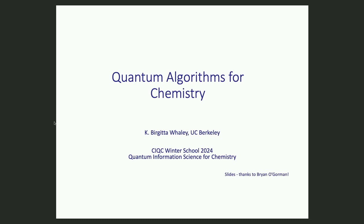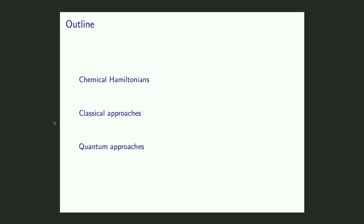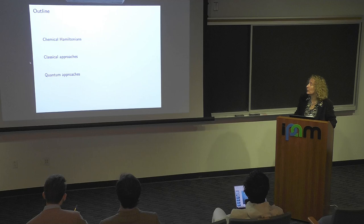So here's the outline of the first part: first I'll summarize, for those of you not very familiar, the form of the chemical Hamiltonian for electronic structure. Then I'll talk a little bit about classical approaches. And finally, after we make the transition from fermionic operators to spin operators, the quantum approaches.